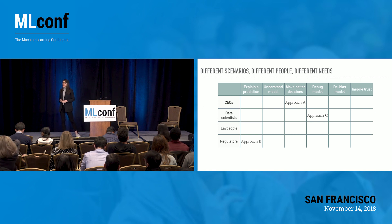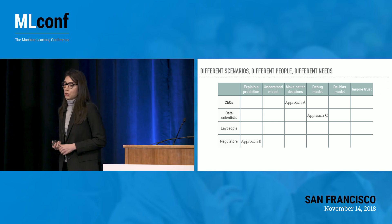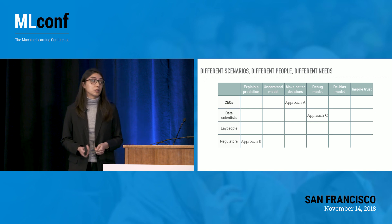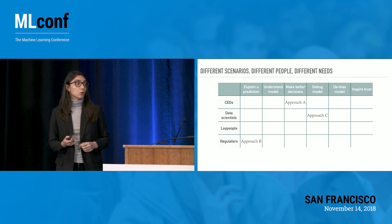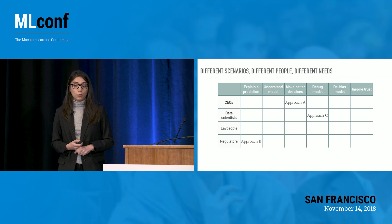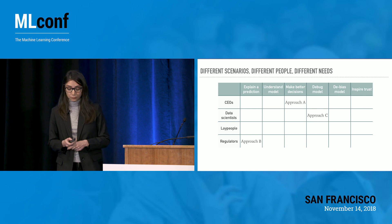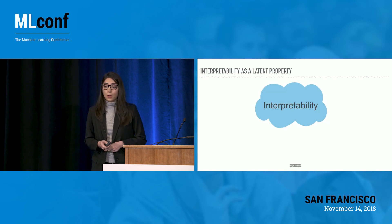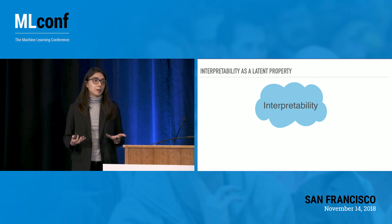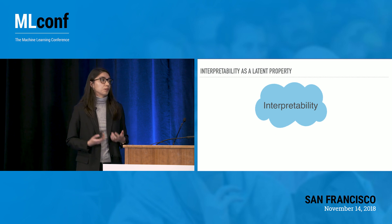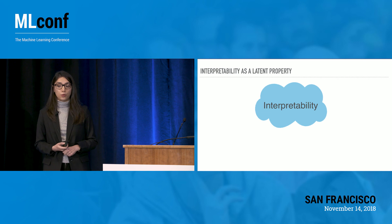The fact that machine learning nowadays is used in many different scenarios by many different people with different needs makes things more complicated. For example, an approach that works best for a regulator who wants to explain why an individual was denied a loan is probably different from the approach that works best for a data scientist who wants to debug a machine learning model.